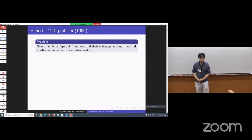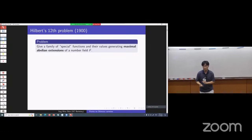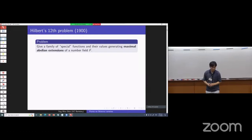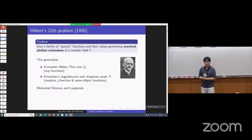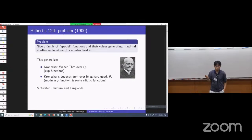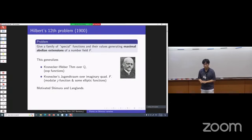Our starting point is Hilbert's 12th problem. The problem is to give a family of special functions and their values generating maximal abelian extensions of a number field. If we think about this over Q, that's the classical Kronecker-Weber theorem, telling you that the maximal abelian extension of Q is generated by roots of unity. Roots of unity can be thought of as special values of the exponential function.